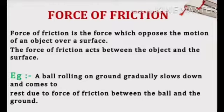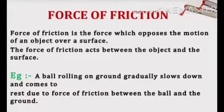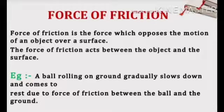The force of friction is the force that opposes the motion of an object over a surface. The force of friction acts between the object and the surface. For example, a ball rolling on the ground gradually slows down and comes to rest due to the force of friction between the ball and the ground. Basically, friction is caused due to the interlocking of surfaces. No solid surface is perfectly smooth — all solid surfaces are rough.